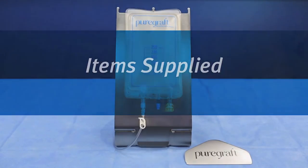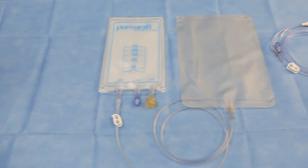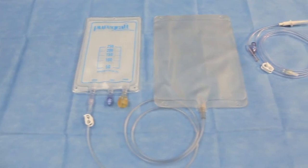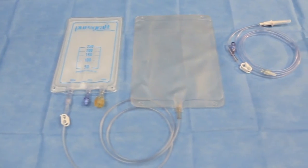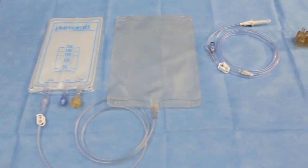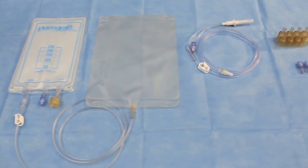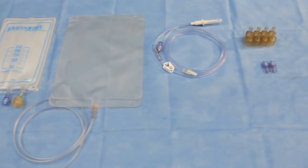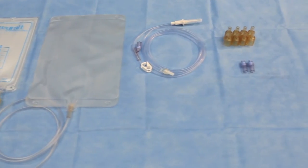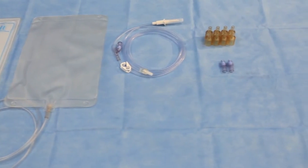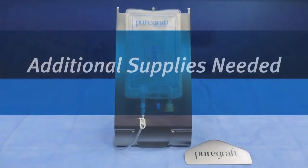The PureGraft 250 system contains the PureGraft 250 bag, a 1.5 liter drain bag, an inlet tubing set to add the washing solution, eight tissue access port adapters, also known as tappers, for tissue insertion, and two tapper to luer adapters.